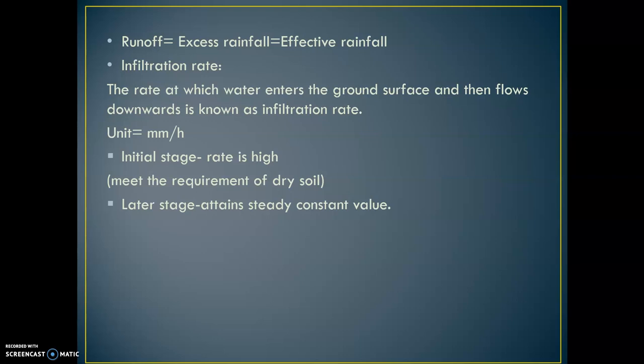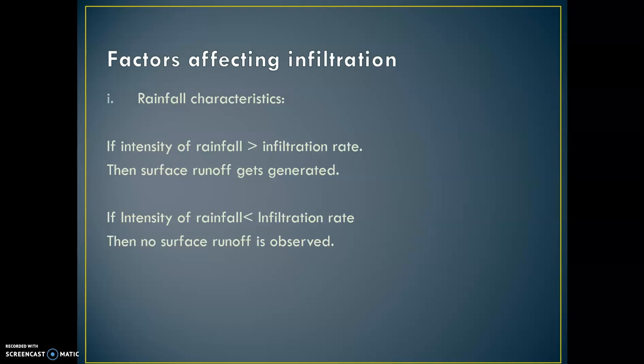The initial infiltration rate is very high because it needs to meet the requirement of dry soil. After that it decreases and attains a steady constant value. If we put an infiltrometer on the ground and add water, at the initial stage the losses are higher, then it decreases and achieves a constant value — maybe 2 mm or 5 mm per hour. Then there are different factors which affect infiltration.